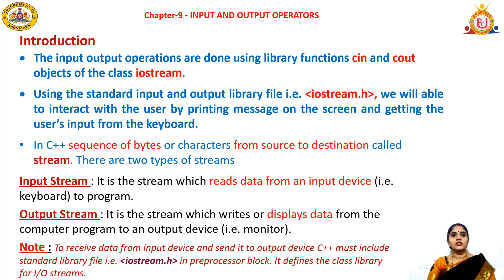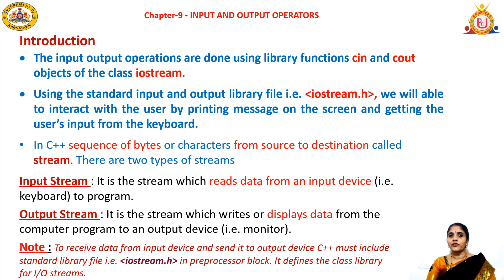There are two types of streams. First is the input stream - it reads data from the standard input device, which is the keyboard, and passes it to the program. The output stream writes or displays data from the program onto the standard output device, which is the monitor. To use cin and cout, you need to include the standard library file iostream.h in your preprocessor block. It defines the class library of IO streams - input and output streams.